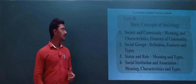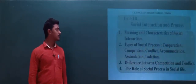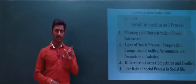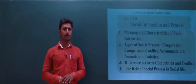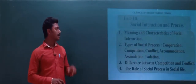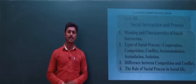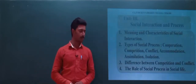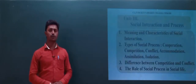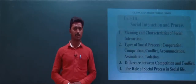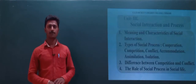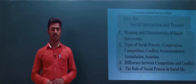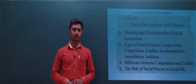Unit Number Three covers social interaction and social process. Number one is meaning and characteristics of social interaction. Number two is types of social process: cooperation, competition, conflict, accommodation, assimilation, and isolation. These are the different types of social process.